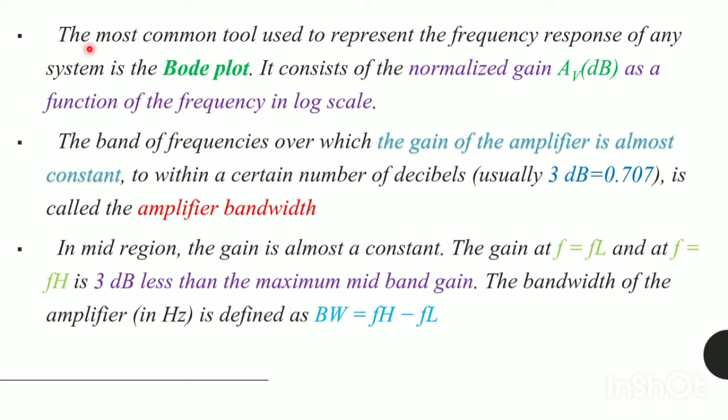The most common tool used to represent the frequency response of any system is the Bode plot and it consists of the normalized gain AV as a function of the frequency in log scale. The band of frequencies over which the gain of the amplifier is almost constant to within a certain number of decibels, usually 3 dB, that is 0.707, is called the amplifier bandwidth.